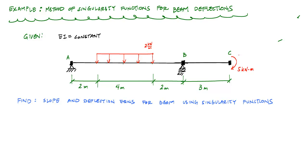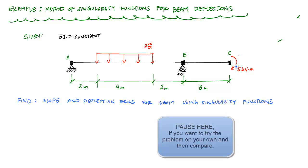Welcome back to Structure Free. In this video, we're going to hit up some beam deflection calculations using singularity functions. What I have here is this simply supported beam ABC with this overhang BC going on. I have a uniformly distributed load in the mid-span of AB and then a concentrated moment at point C. I want to use singularity functions to determine slope and deflection equations for the entire length of the beam.